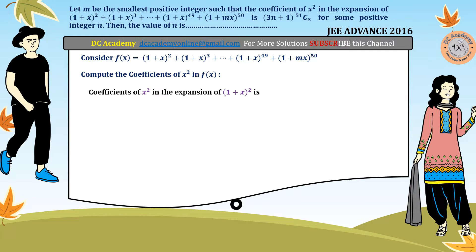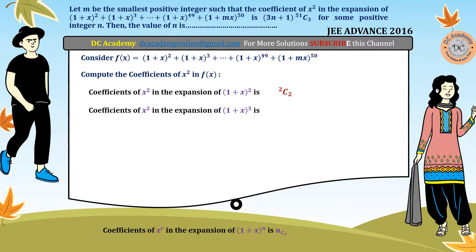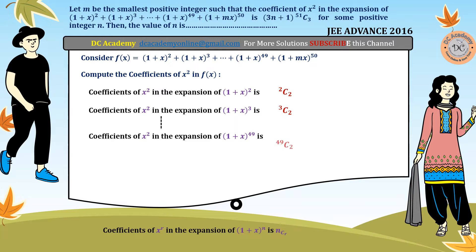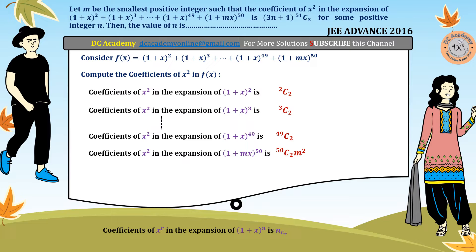Using the identity that the coefficient of xʳ in (1+x)ⁿ is nCr, the coefficient of x² in (1+x)² is ²C₂, in (1+x)³ is ³C₂, in (1+x)⁴⁹ is ⁴⁹C₂, and in (1+mx)⁵⁰ is ⁵⁰C₂ · m², because the term involves (mx)², giving us m².